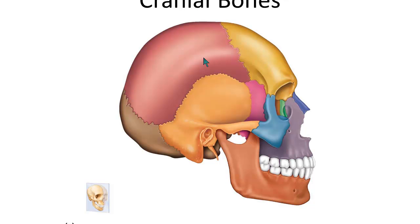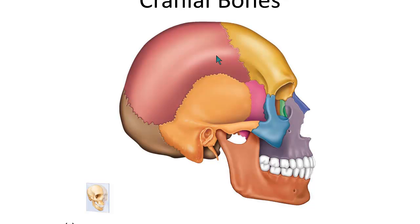On either side of the head, near the top, are a pair of parietal bones. On one side is a parietal bone, and on the other side is another parietal bone. They're separated by a suture in the center that divides the two parietal bones.